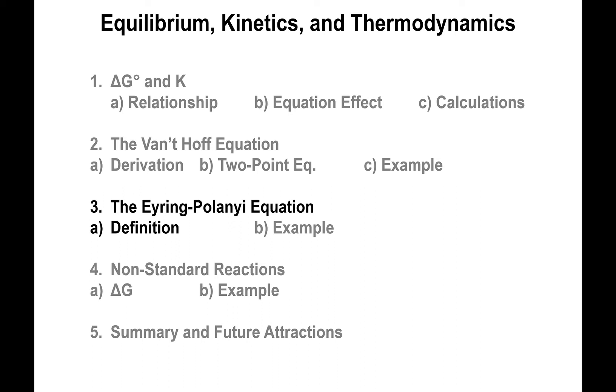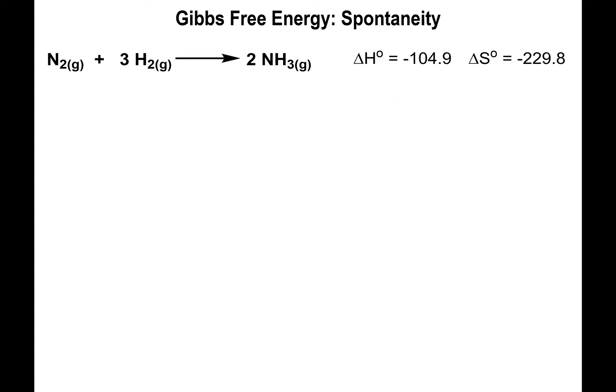The Eyring-Polanyi equation has to do with the combination of thermodynamics and kinetics. We know that delta G equals delta H minus T delta S, and that's a measure of the spontaneity of the reaction.